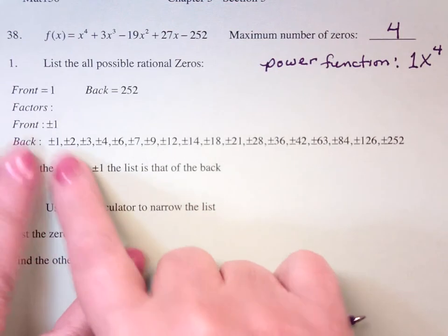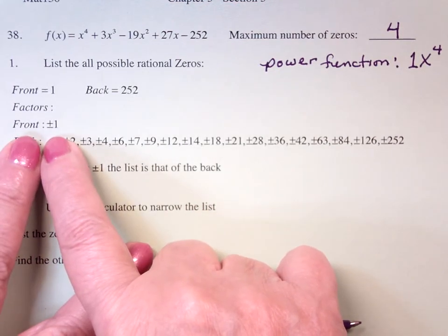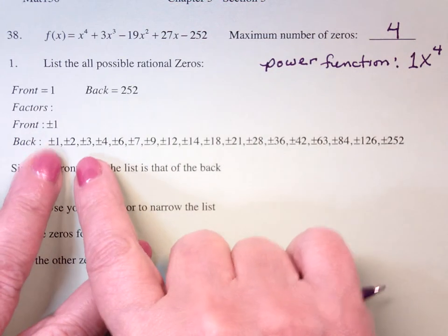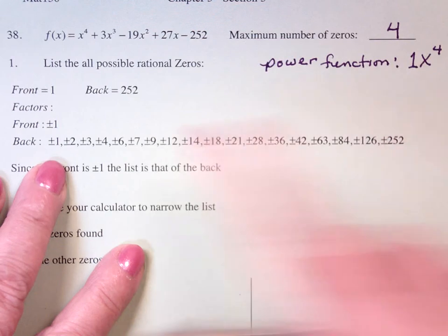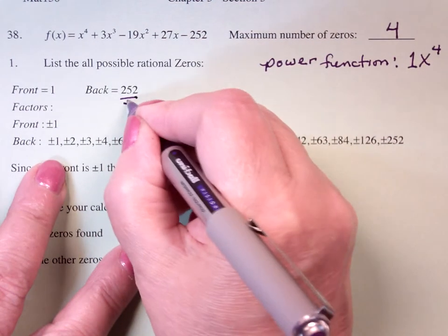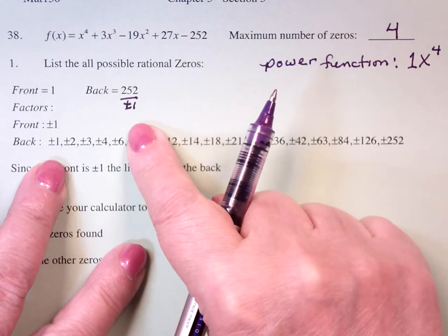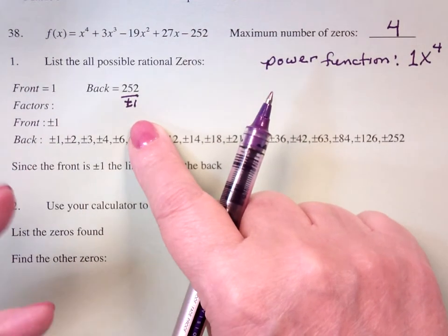And if I look at the divisors, the good news is I'm dividing by plus or minus 1. So it's the factors of the back divided by the factors of the front. And so I'm just going to be dividing the factors by plus or minus 1. And if I'm dividing that thing by plus or minus 1, it's just the list of the factors of the back.